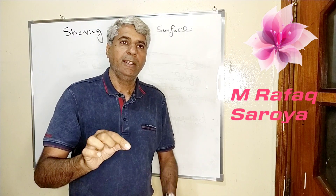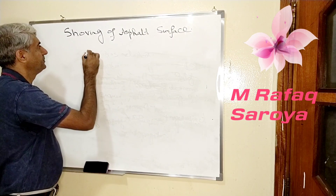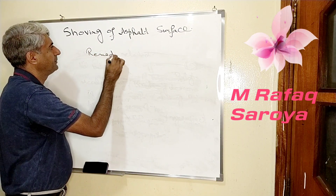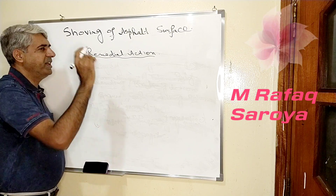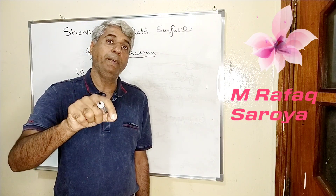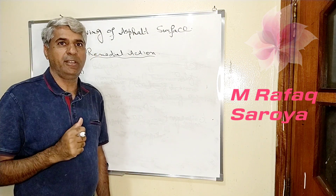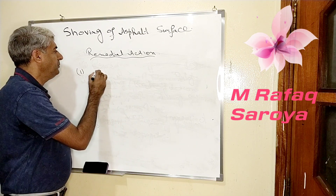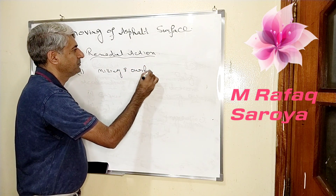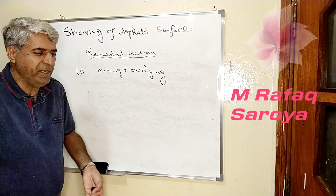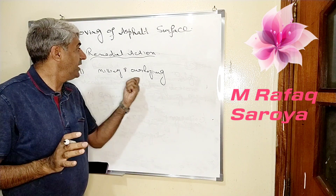Next we will explain how to tackle this situation — the remedial actions. This distress can be of mild nature or more severe nature. If it is of mild nature, we can do milling and overlaying: mill a certain surface and lay the asphaltic surface again. This is one of the easiest solutions — milling and overlaying.